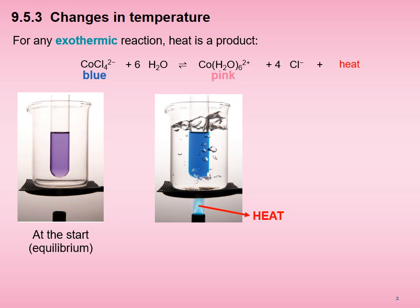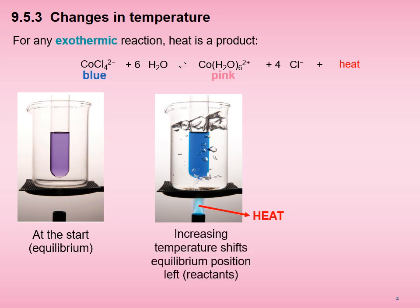When heat is supplied, the reaction mixture turns from violet to blue. This implies that adding heat or increasing the temperature pushes the equilibrium position to the left, to favour the formation of reactants. Treating heat as a product, we imagine that when heat is added, the system feels stressed — having gotten used to being cool, it feels too hot and needs to cool off.